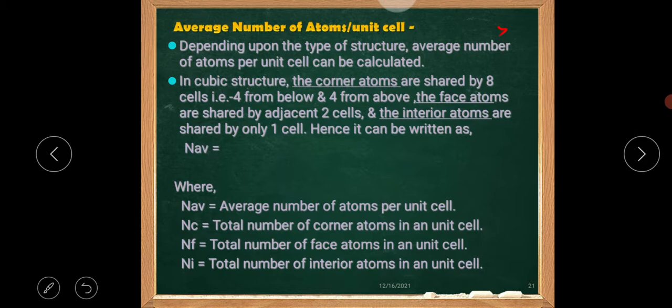In cubic structure, the corner atoms are shared by 8 cells, i.e. 4 from below and 4 from above. The face atoms are shared by adjacent 2 cells. The interior atoms are shared by only one cell.